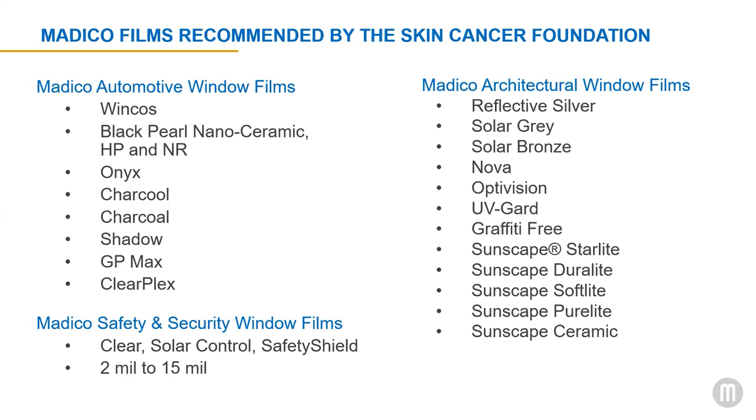Matico's solar control window films offer a wealth of benefits to individuals driving or riding in a car, relaxing at home, or working in an office. Besides providing cooler, comfortable interiors and reducing glare, most importantly Matico's window films block 99% of the sun's harmful ultraviolet rays, offering necessary skin protection. Our automotive, solar control, and safety window films block the sun's UV rays, providing full coverage and acting as a sunscreen.